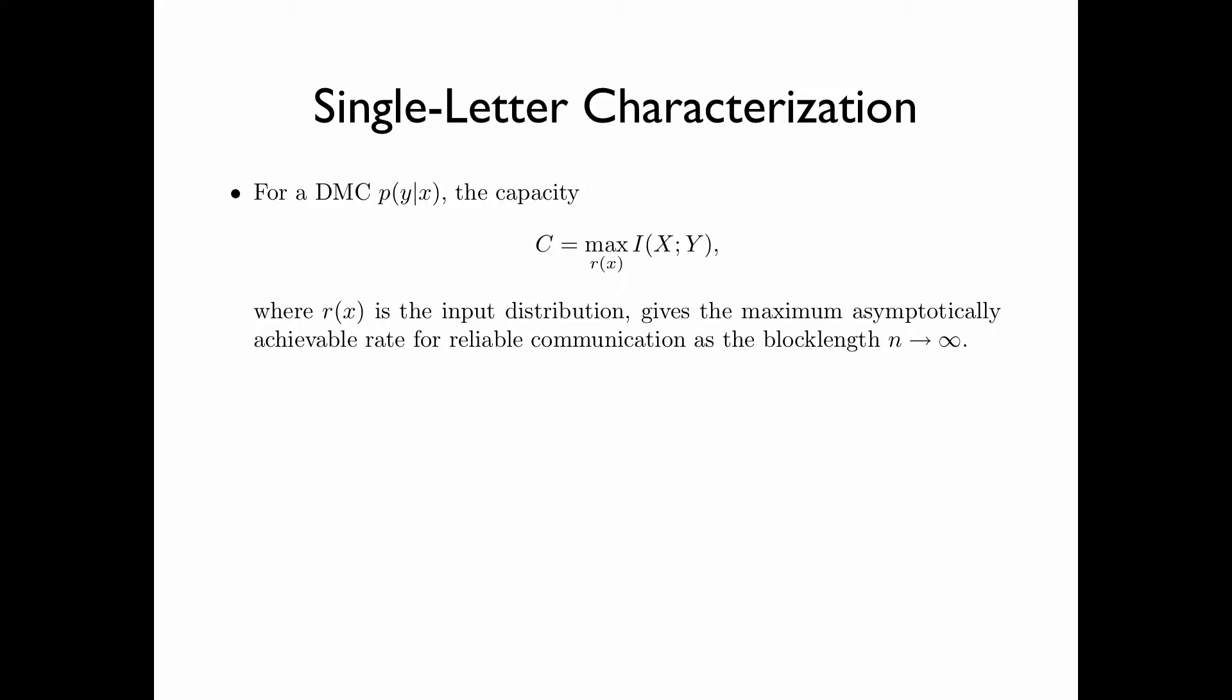For a discrete memoryless channel p(y|x), the capacity C equals the maximum of the mutual information between input X and output Y of a single use of the channel over all input distribution r(x).